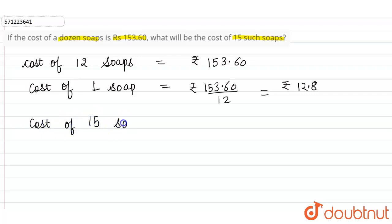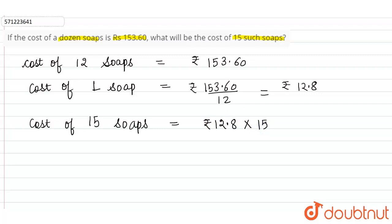We have to calculate the cost of 15 soaps. So, we have to multiply the price of 1 soap with 15. So, 12.80 into 15 — cost of 15 soaps will be equals to Rs. 192, and this is the required answer.